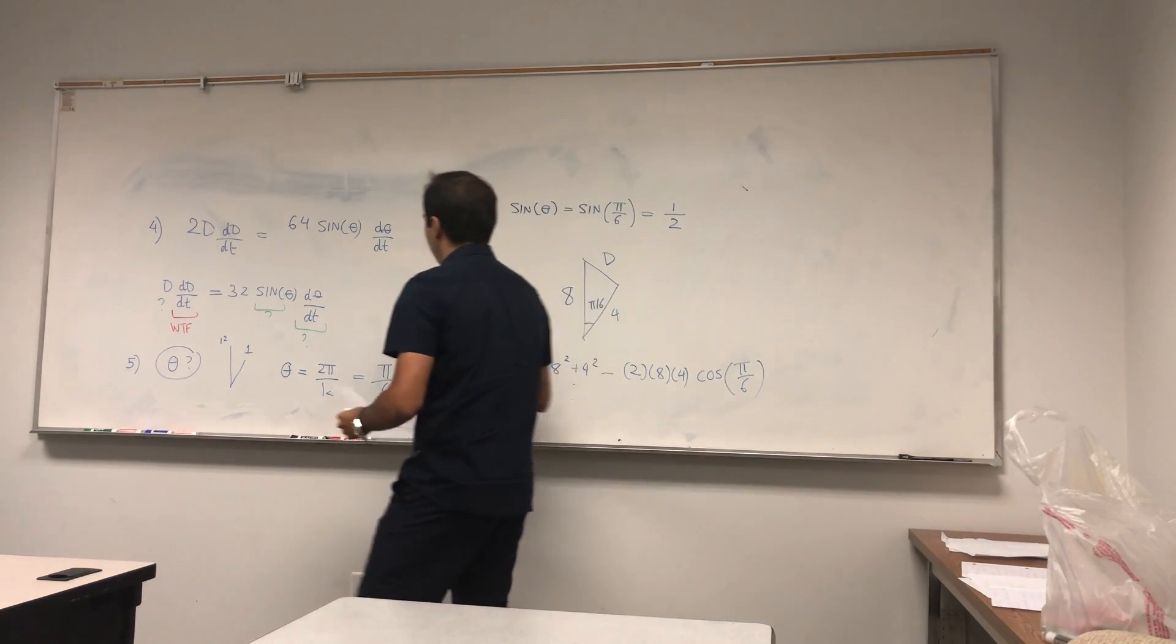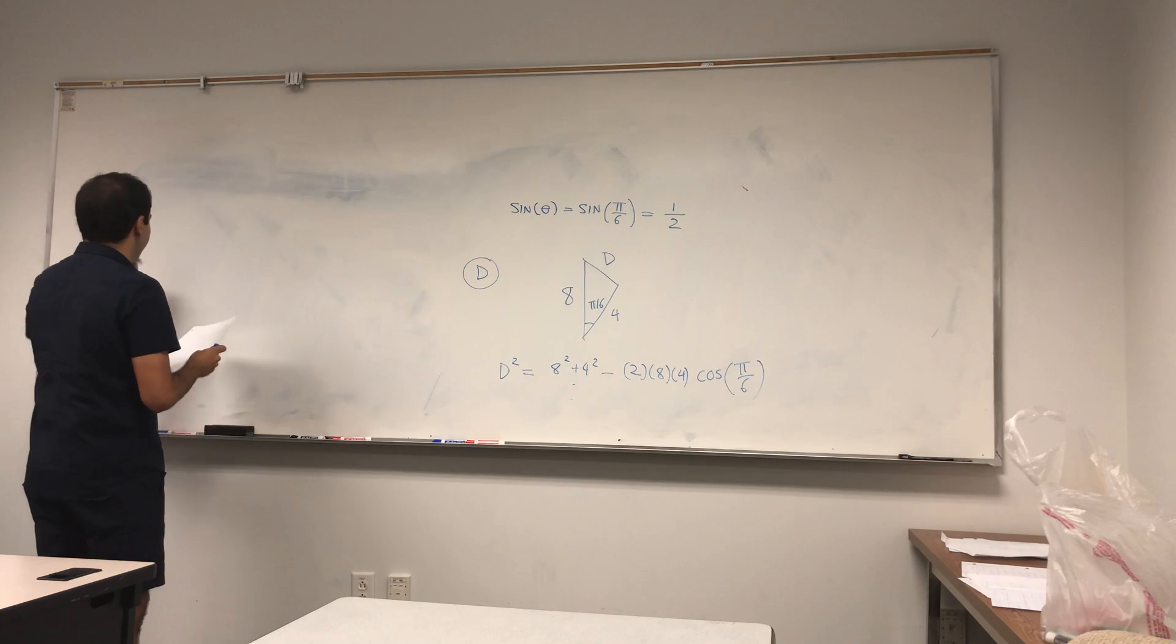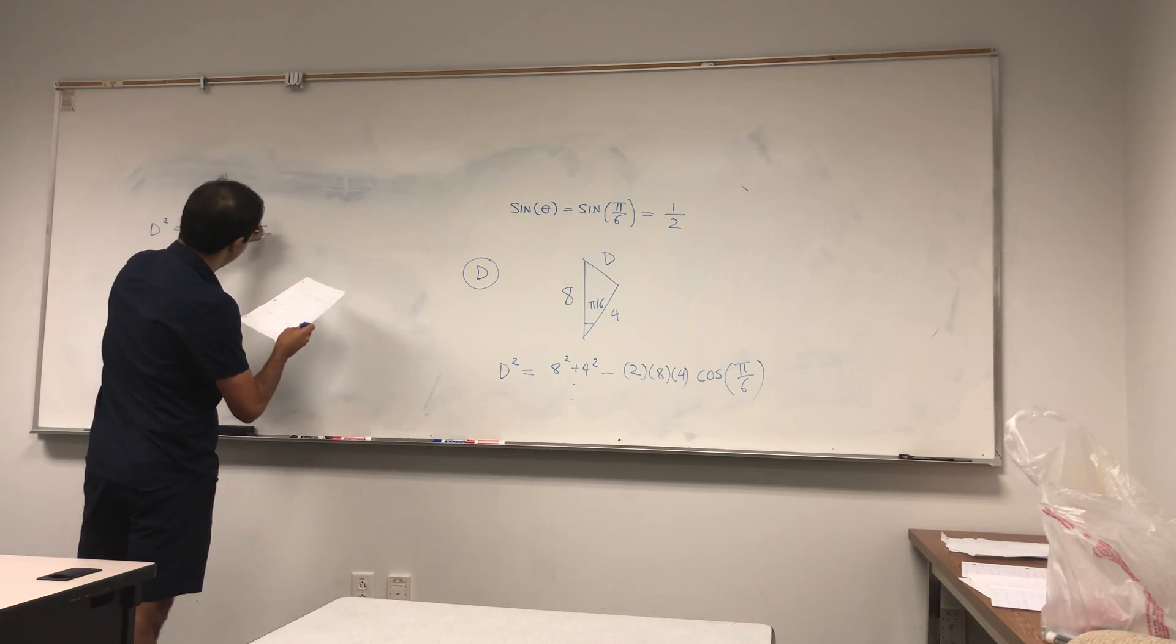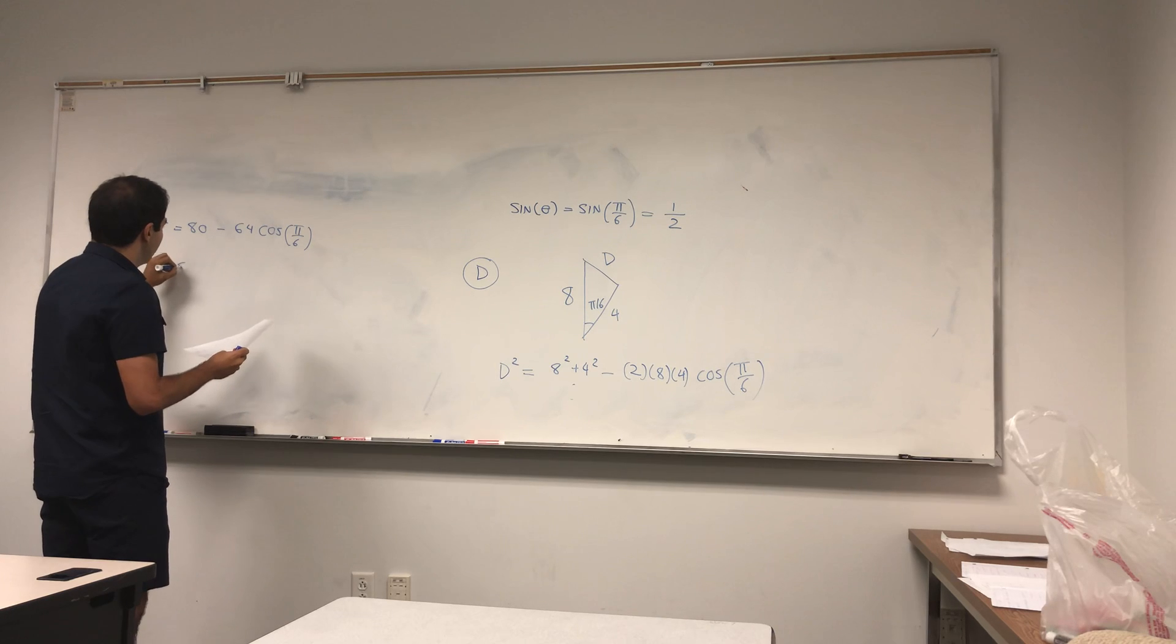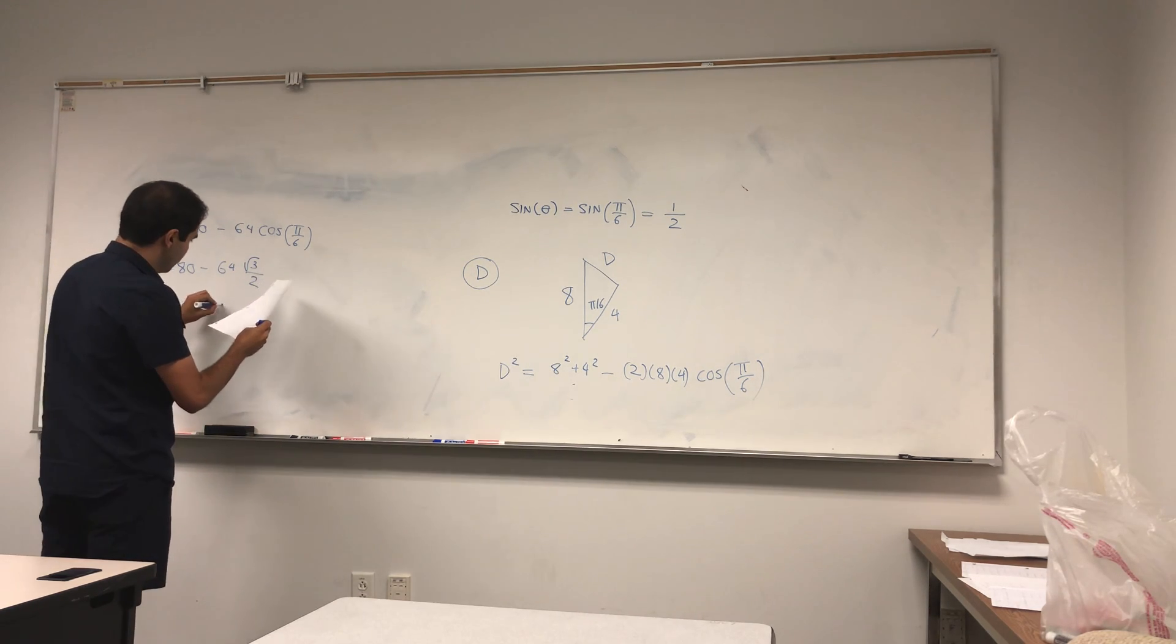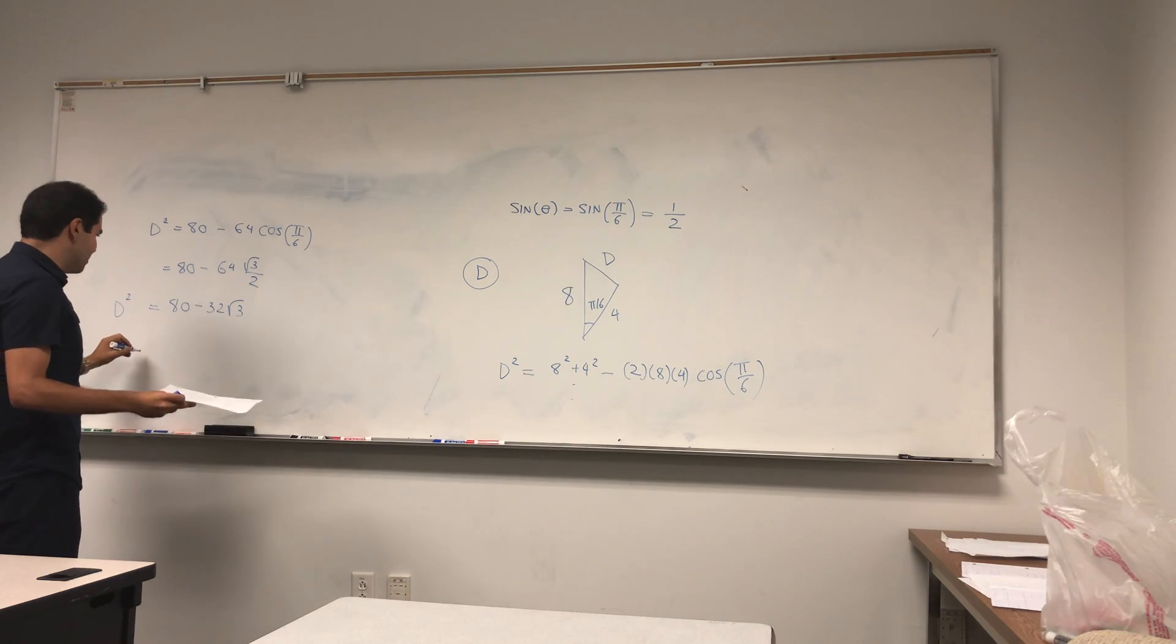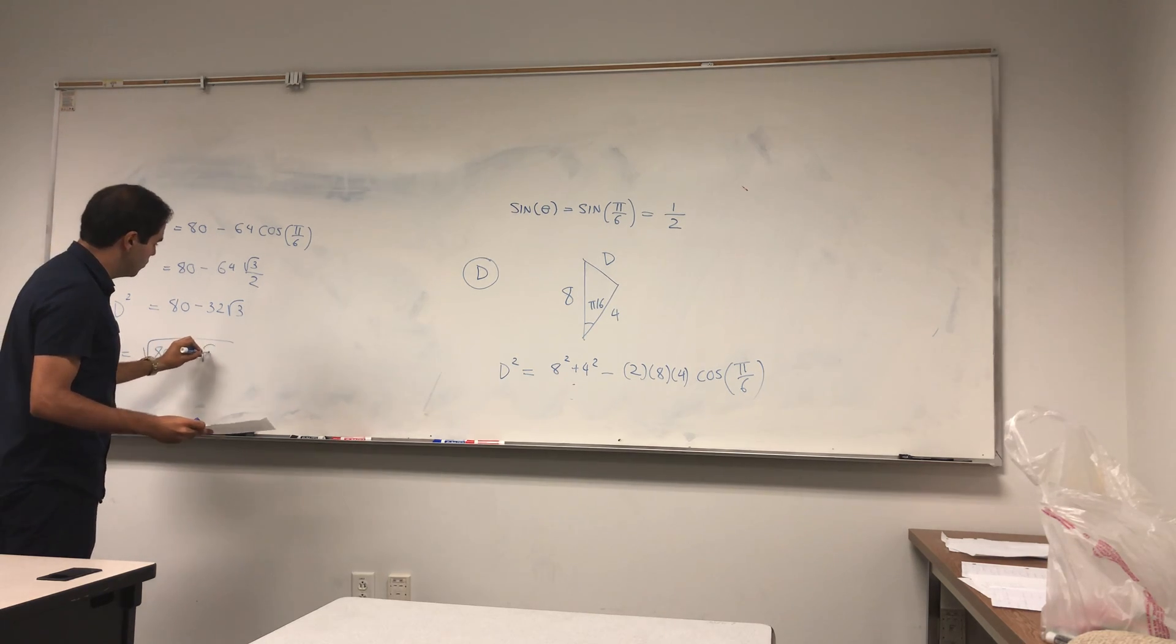And so 8 squared plus 4 squared, again I did that, so it's 80. So D squared equals 80 minus 64 cosine of pi over 6. Pi over 6 is 30 degrees, so it's square root of 3 over 2. That's an ugly one. So it becomes 80 minus 32 square root of 3. So D squared is 80 minus 32 square root of 3, so D being a positive thing, it's square root of 80 minus 32 square root of 3.